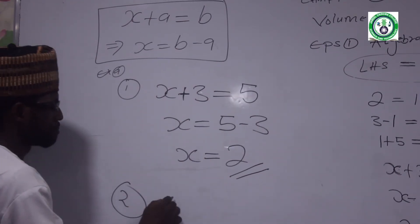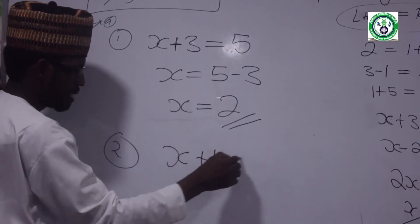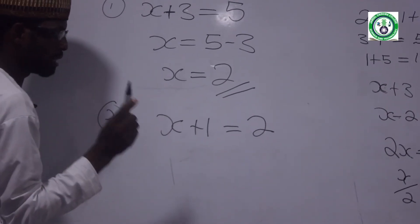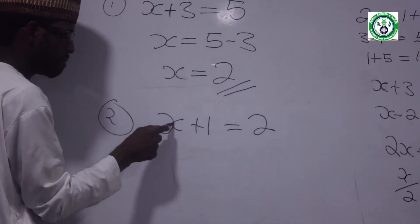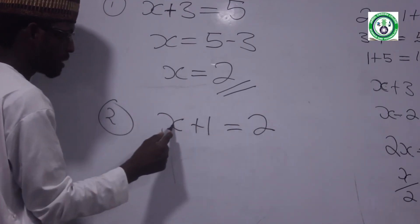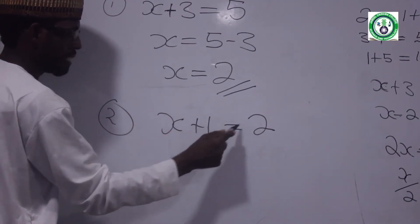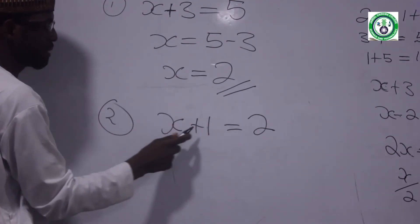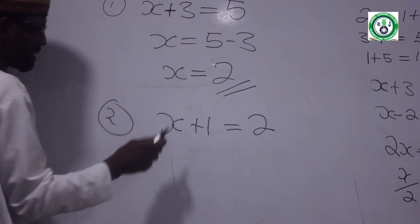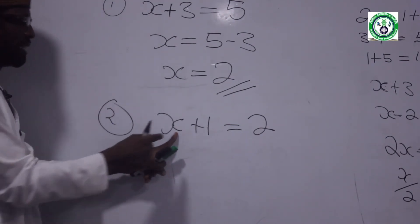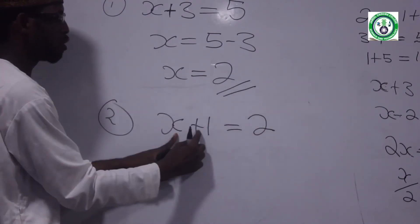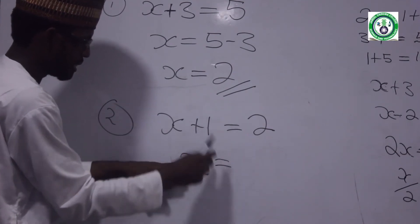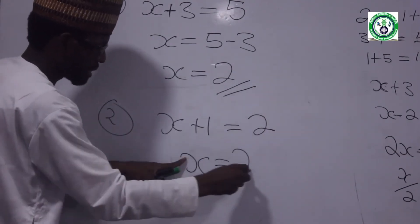Example number 2: x plus 1 equal to 2. In Hausa: a certain unknown number — when I add 1, I get 2. X has plus 1 with it; we need to isolate x. Move plus 1 across the equal sign; it becomes minus 1.